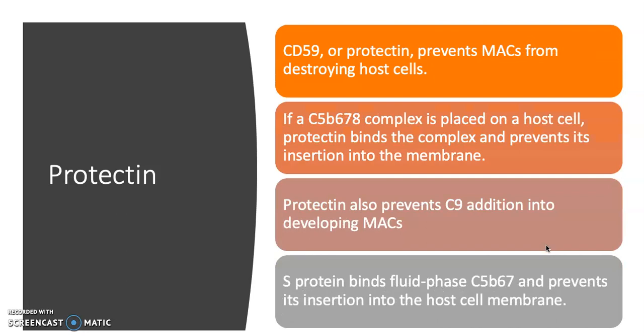Protectin prevents MACs from destroying host cells. It binds the complex and prevents it from inserting itself into the membrane, so if one of these MACs wants to insert itself into a host cell membrane, protectin stops it so it can't harm the cell. Protectin also prevents C9 addition into developing MACs, and S-protein binds fluid phase C5B67 and prevents its insertion into the host cell membrane, very similar to what protectin does.